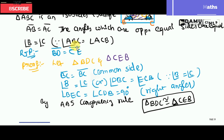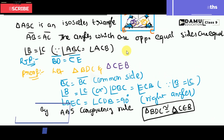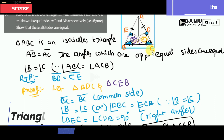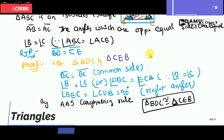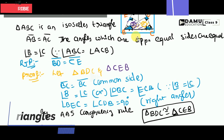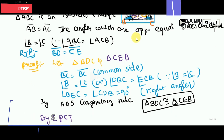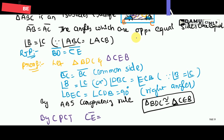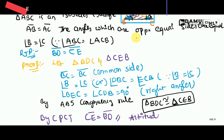So by using the CPCT rule — corresponding parts of congruent triangles are equal — we can write that CE will be equal to BD. So the altitudes are equal.